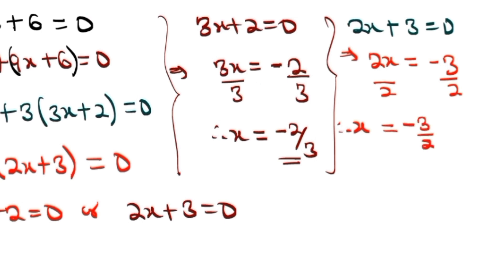Now -3/2 is an improper fraction, so you can write it as the mixed number -1 and 1/2. Beautiful, and we are done.